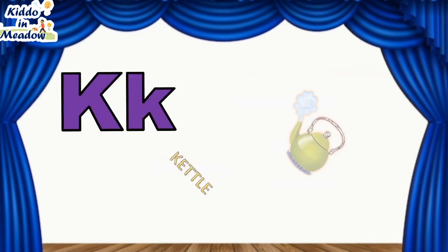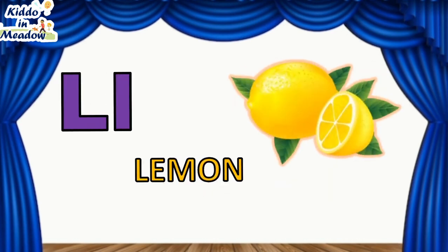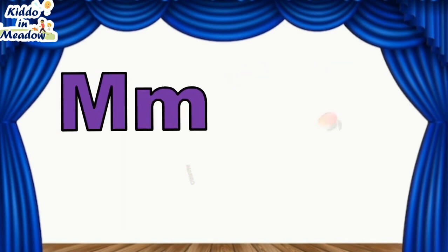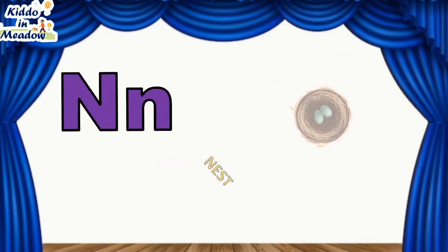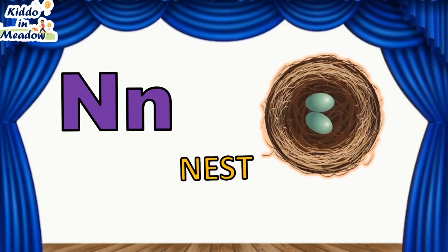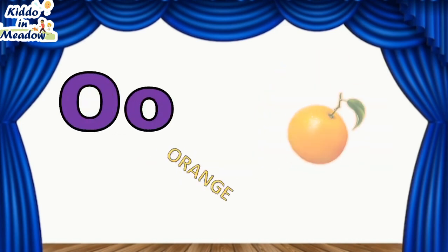K is for Kettle. L is for Lemon. M is for Mango. N is for Nest.